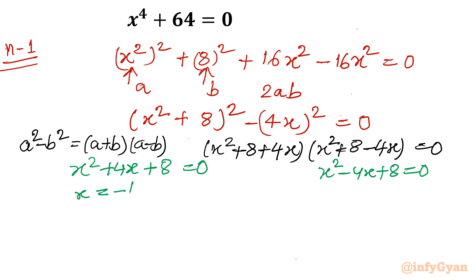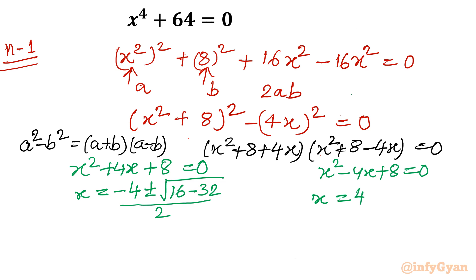Using the quadratic formula, x equals minus b (which is −4), plus or minus the square root of b-squared (16) minus 4ac (32), all divided by 2a, which is 2. For the second equation, only the sign of b changes: in place of −4 we write +4, plus or minus the square root of 16 minus 32 divided by 2.